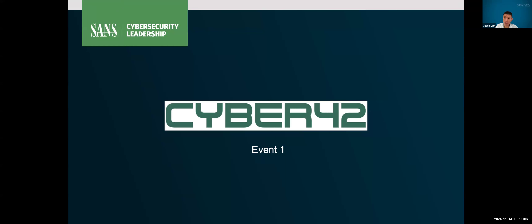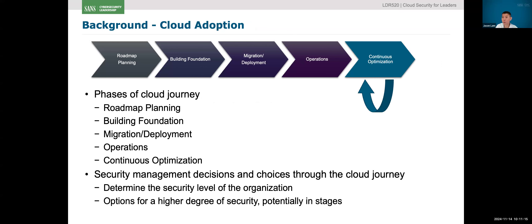Before we look at the different choices for event one, I want to give a little background. We cover this type of material in the class to get everybody in the right frame of mind. The first topic is really about cloud adoption strategy. In adopting cloud, there are a lot of different considerations. In general, organizations want to plot out a roadmap for how they want to adopt the cloud — very general, generic: these are our business requirements, this is why we want to adopt cloud, these are the things we want to support.